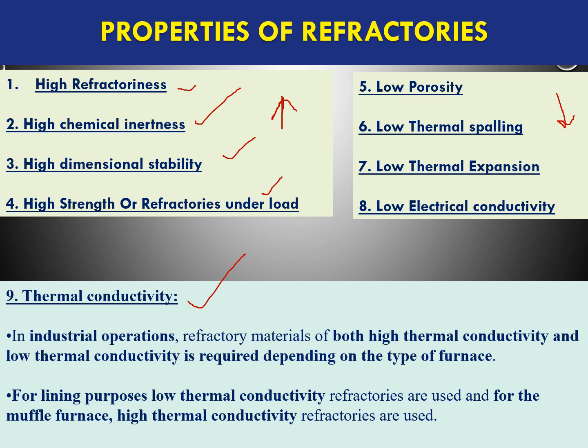The ninth property is thermal conductivity, which is application-dependent. When refractory materials are used as lining for hot surfaces, they should not conduct heat. However, when used to make crucibles, incinerators, or reactors, they should act as good heat conductors. Therefore, some refractory materials are good heat conductors, while others are not, depending on the intended application.